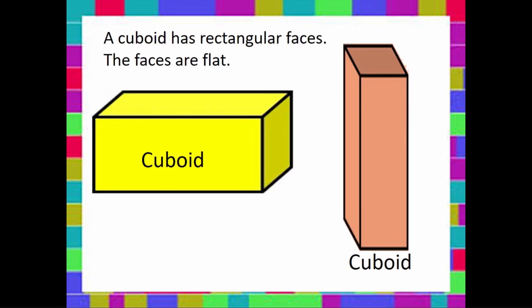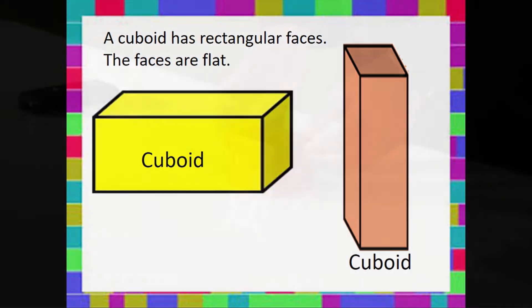We're going to look at our next shape, a cuboid. A cuboid has rectangular faces. The faces are flat. What do you notice about the cuboid?